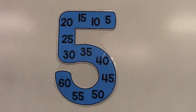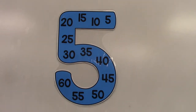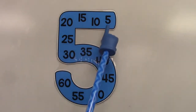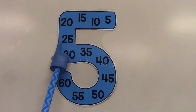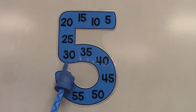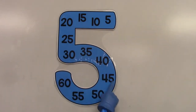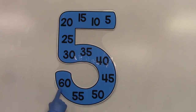Let's skip count by the number five. Learning to skip count by five is very important because we need it when we're telling time and when we're counting money. Let's begin: five, 10, 15, 20, 25, 30, 35, 40, 45, 50, 55, 60.